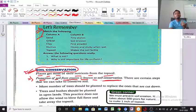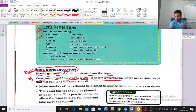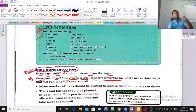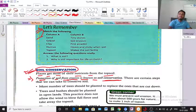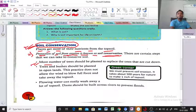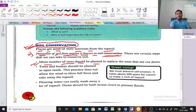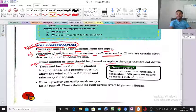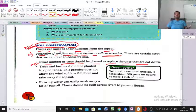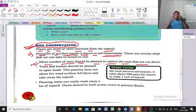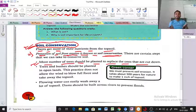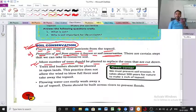There are certain steps that we can follow to conserve soil. What are these? First one is more number of trees should be planted to replace the ones that are cut down. If we plant trees where we cut them down, we can control the soil erosion.